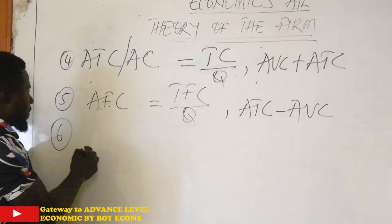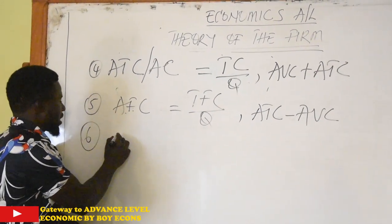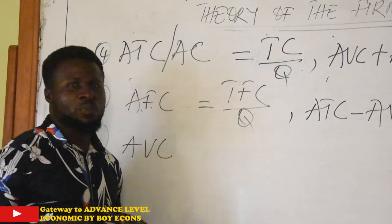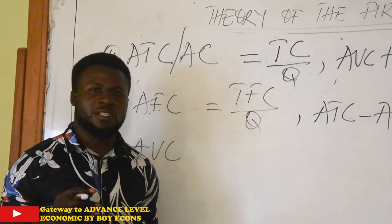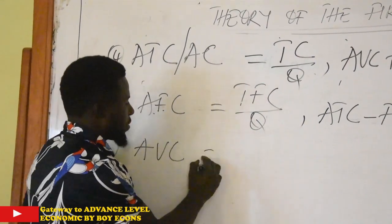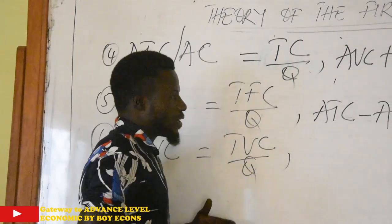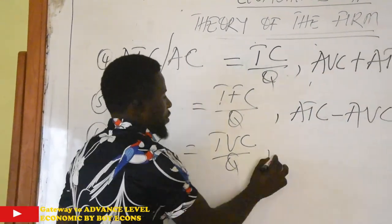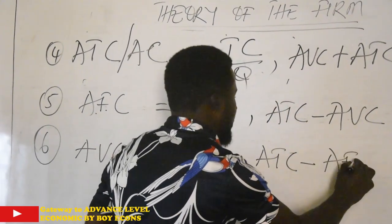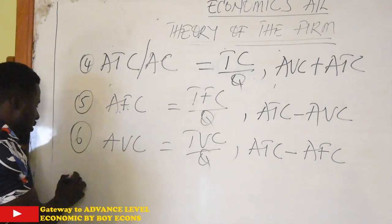And then we have the last concept of cost, last but not least, average variable cost, which is that proportion of variable cost spent on each unit of output. It is calculated as total variable cost divided by output. Or if you are given values in averages, you say average total cost minus average fixed cost. That will lead you to the average variable cost.